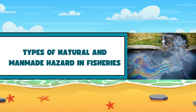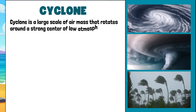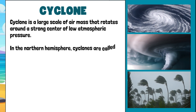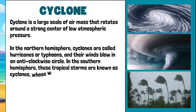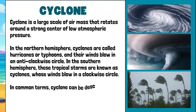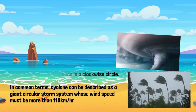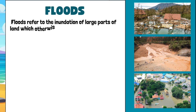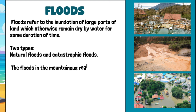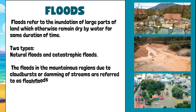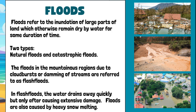Types of natural and man-made hazards in fisheries. Cyclone: a cyclone is a large-scale air mass that rotates around a strong center of low atmospheric pressure. In the Northern Hemisphere, cyclones are called hurricanes or typhoons, and their winds blow in an anti-clockwise circle. In the Southern Hemisphere, these tropical storms are known as cyclones, whose winds blow in a clockwise circle. In common terms, a cyclone can be described as a giant circular storm system whose wind speed must be more than 119 kilometers per hour. Floods refer to the inundation of large parts of land, which otherwise remain dry, by water for some duration of time. There are two types: natural floods and catastrophic floods. Floods in mountainous regions due to cloudbursts or damming of streams are referred to as flash floods, where the water drains away quickly but only after causing extensive damage. Floods are also caused by heavy snow melting.